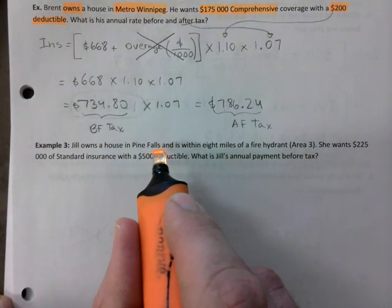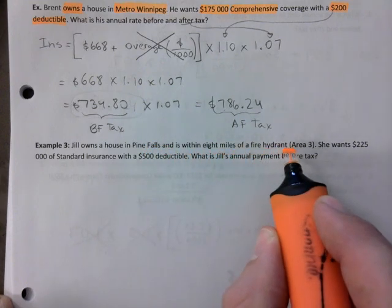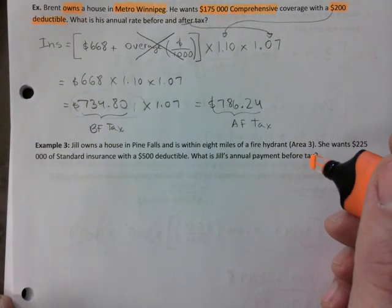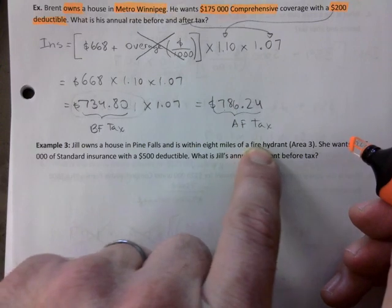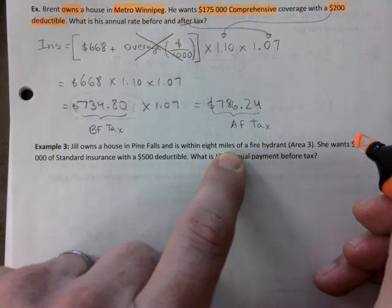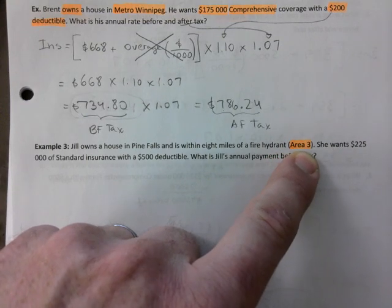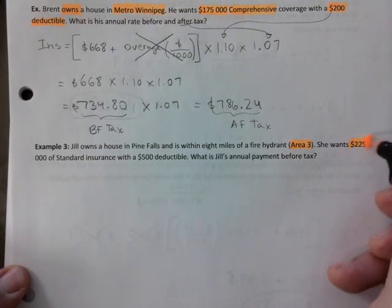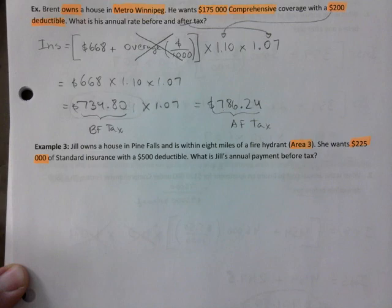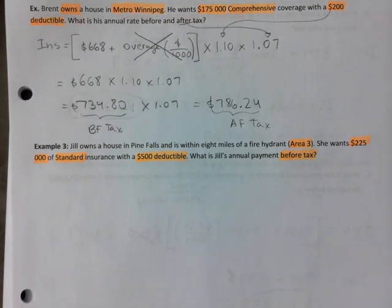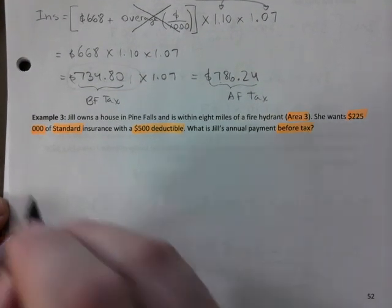One more example. Jill owns a house in Pine Falls — that's outside Winnipeg — within eight miles of a fire hydrant. A few years ago you'd have had a chart to determine that; that puts her in Area 3. She wants $225,000 of standard insurance with a $500 deductible, before taxes.